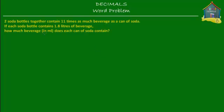Welcome to homecampus.com.sg. Let's solve this word problem. It says two soda bottles together contain 11 times as much beverage as a can of soda. If each soda bottle contains 1.8 liters of beverage, how much beverage in milliliters does each can of soda contain?